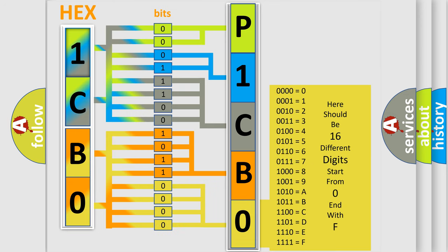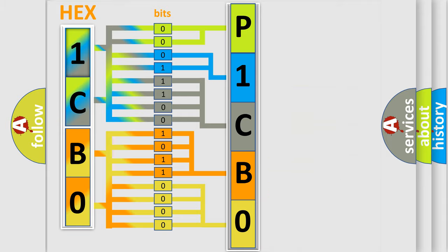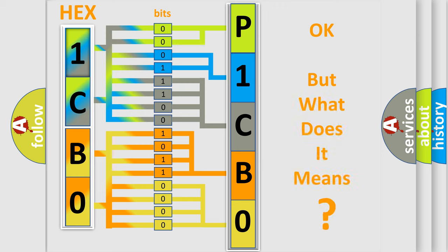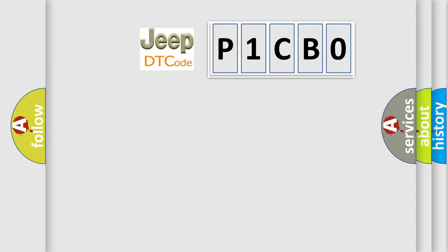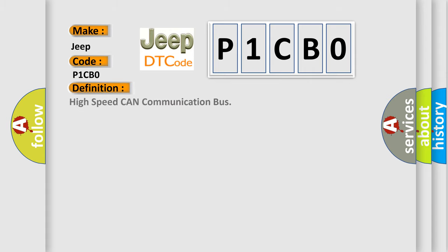We now know in what way the diagnostic tool translates the received information into a more comprehensible format. The number itself does not make sense to us if we cannot assign information about what it actually expresses. So, what does the diagnostic trouble code P1CB0 interpret specifically for Jeep car manufacturers?